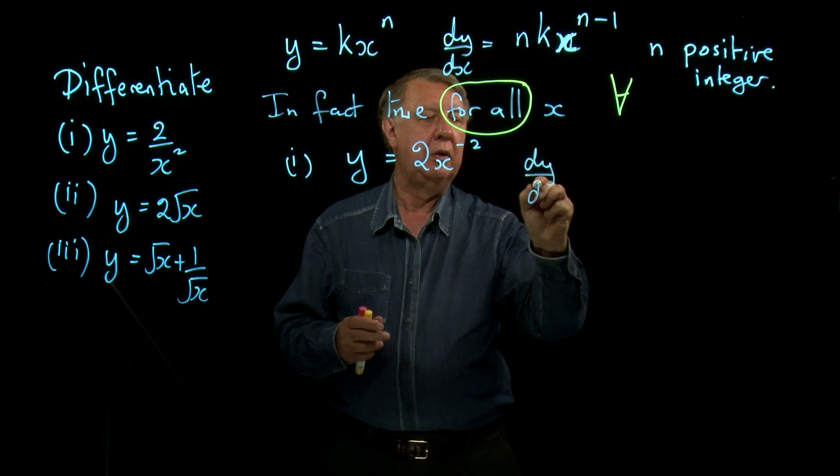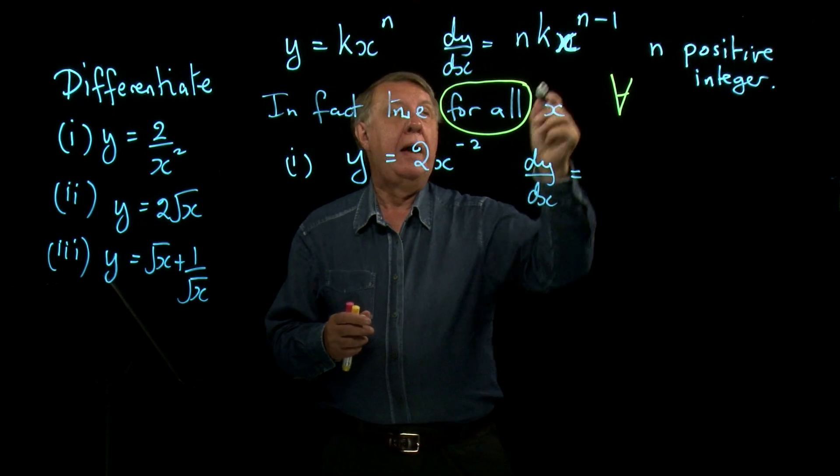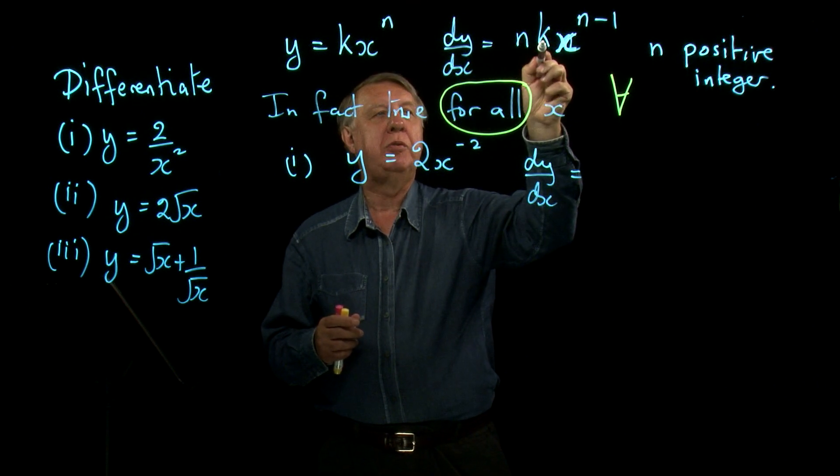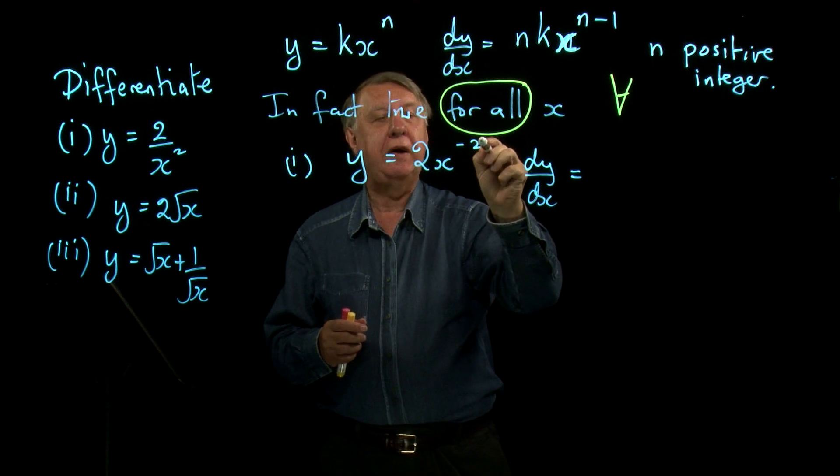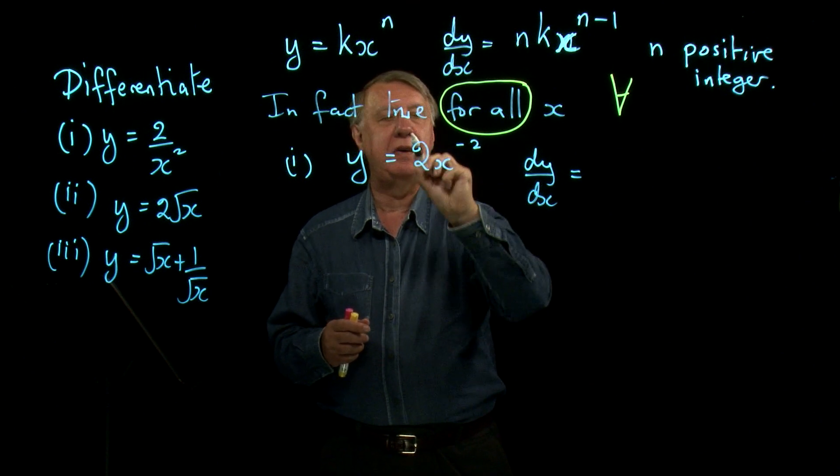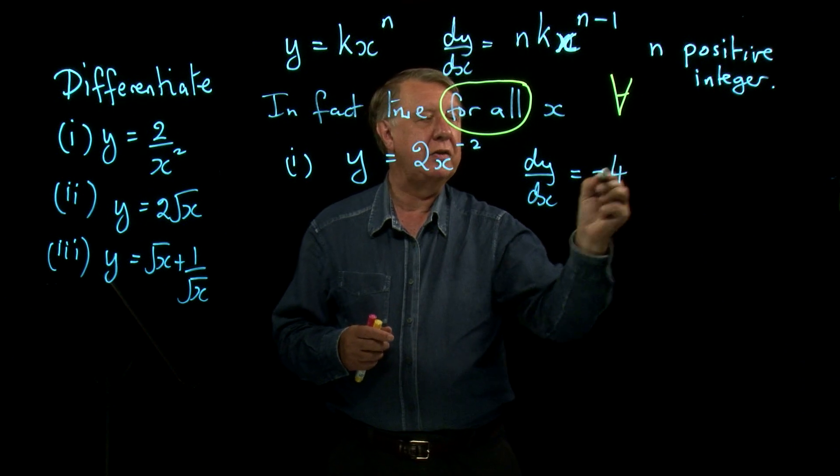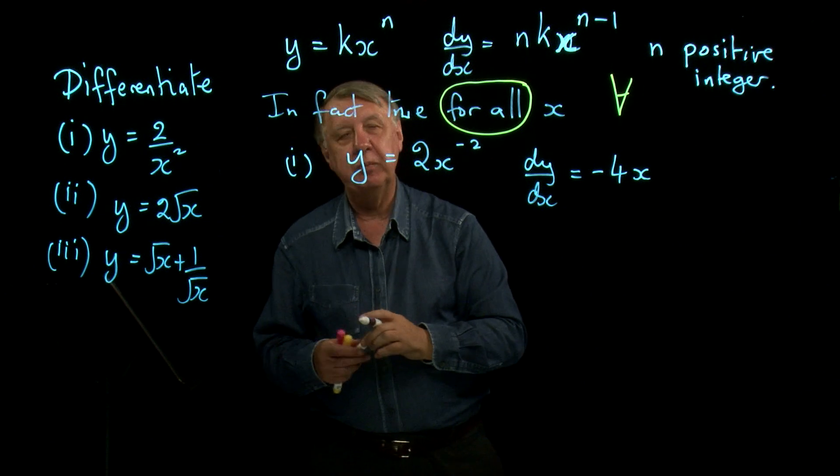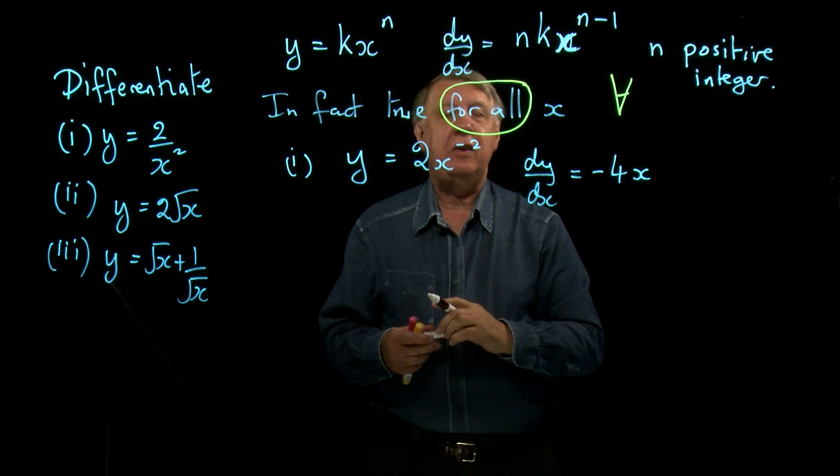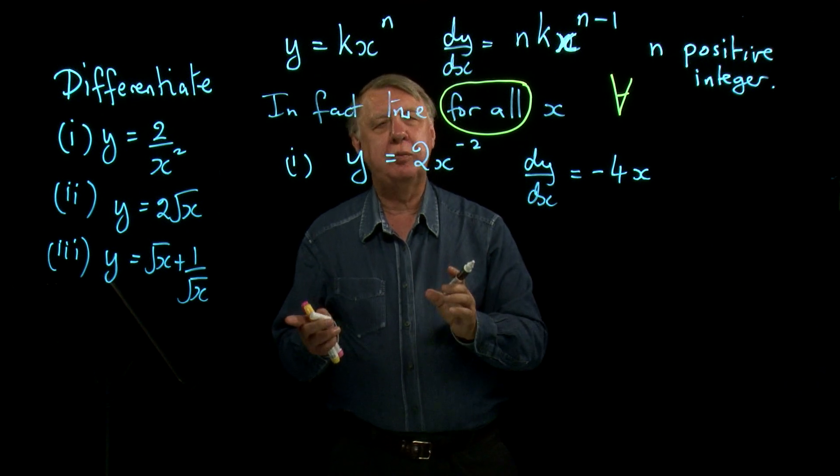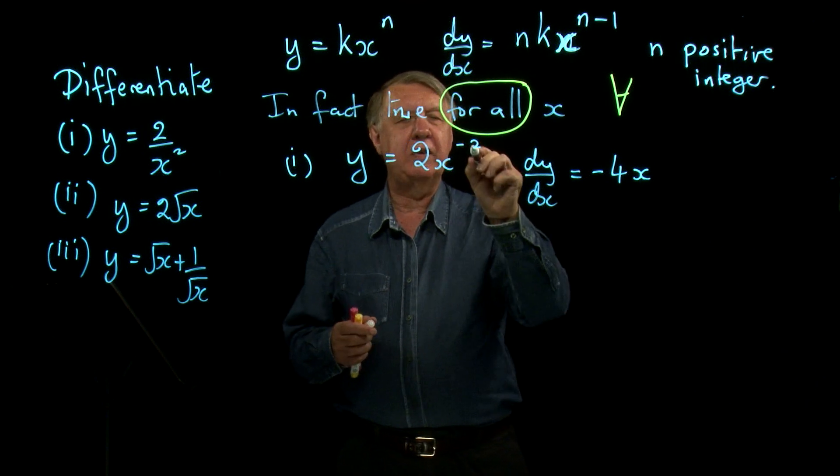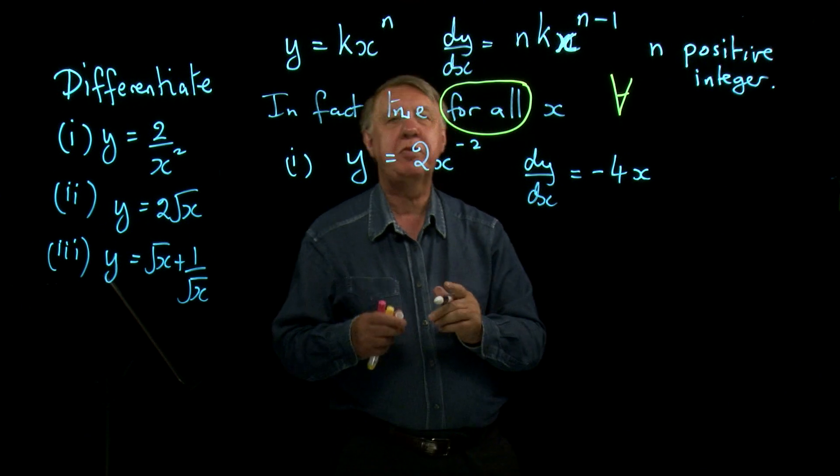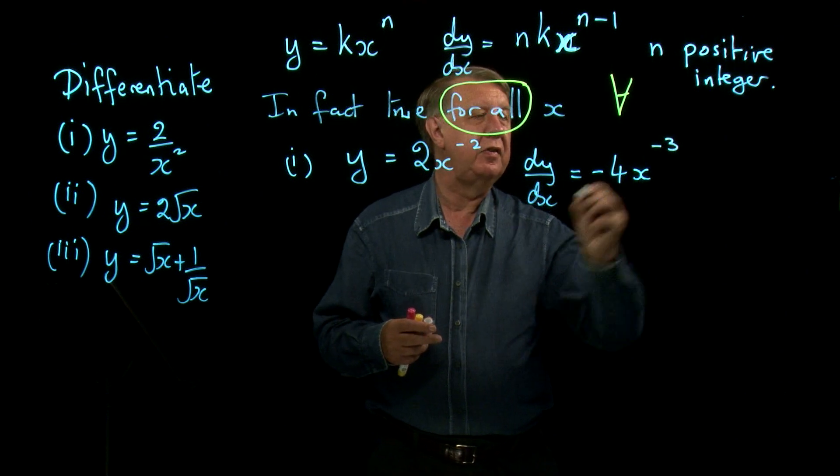So dy by dx, and the rule, we bring down the power and multiply it by the number in front. The power is negative 2. If I bring down that power and multiply by the number in front, I get negative 4. Then I have to take 1 away from the power. And of course you get so locked into the original formula and the work you've done before that a lot of people sadly will write this as negative 1. If you take 1 away from negative 2, you get negative 3.